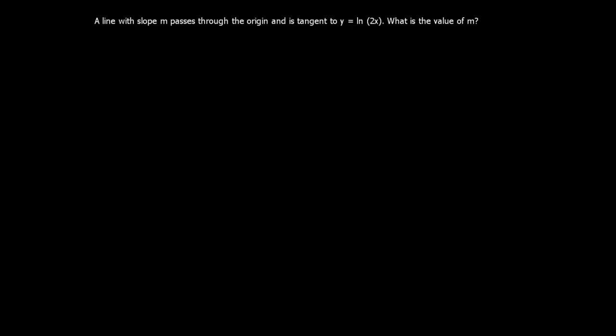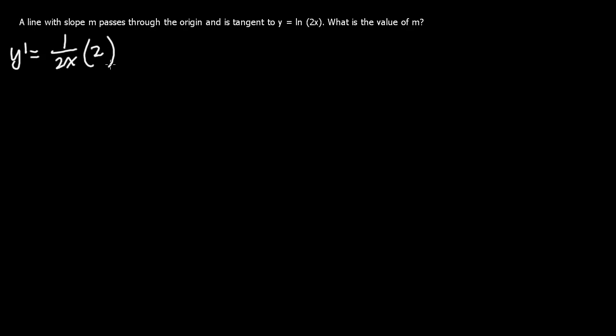In this question, we're asked to find m. To begin with, we need to find y prime, which is your derivative, which also is your slope of the tangent line. So y prime equals 1 over 2 times 2, which then equals to 1 over x.